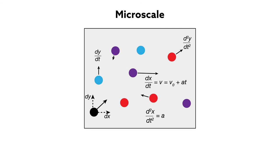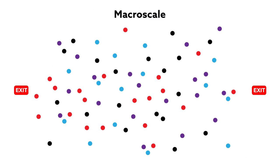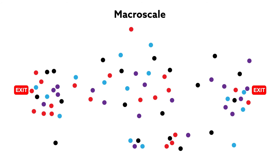On the micro scale, individual people can be assigned velocities and trajectories as they wade through the cluster to find the closest or most convenient exit. And on the macro scale, researchers can talk about how the density or concentration of people varies over time.